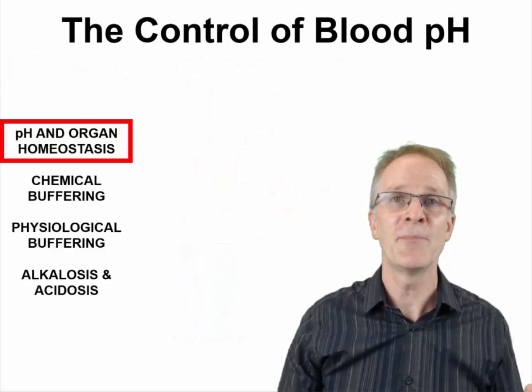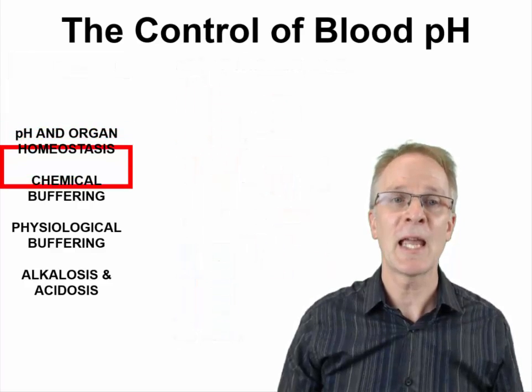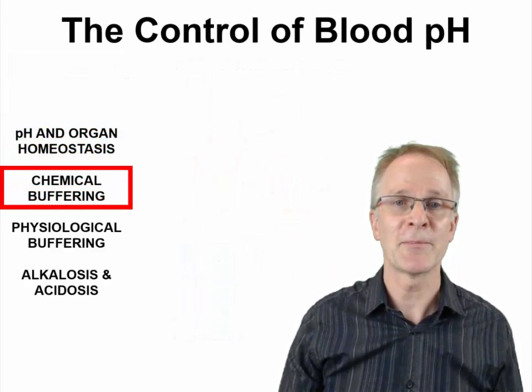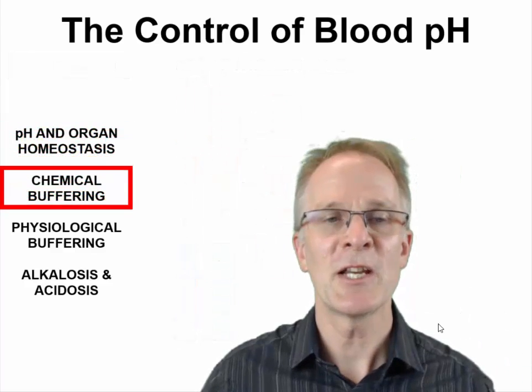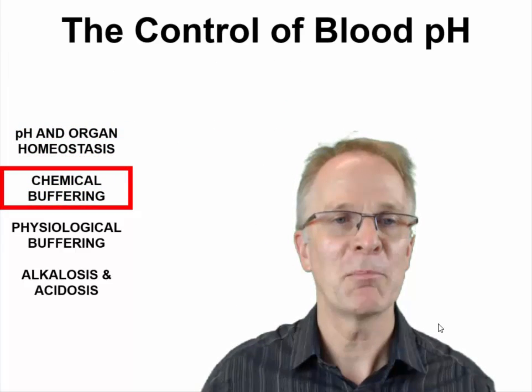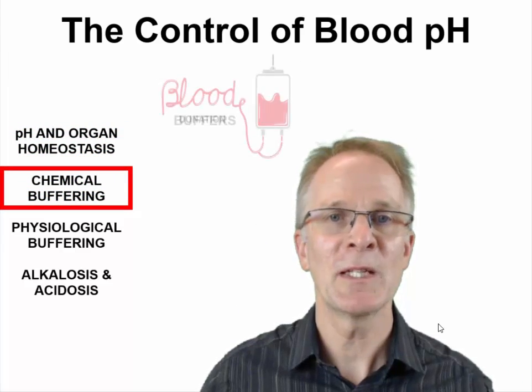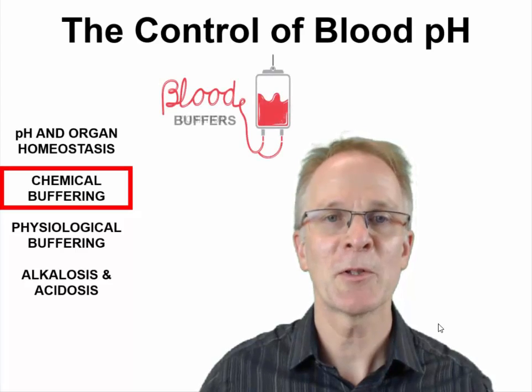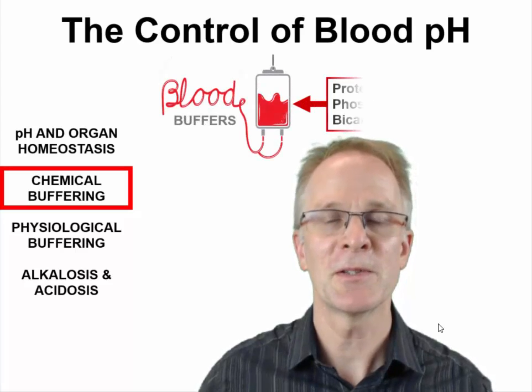So how do our cells and body maintain and make sure that our blood stays within that narrow range? Well, the answer is chemical buffering. To resist any change in pH, our blood contains three principal chemical buffering systems.